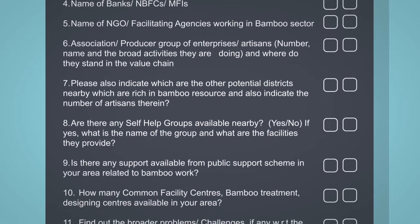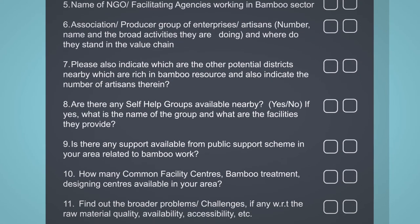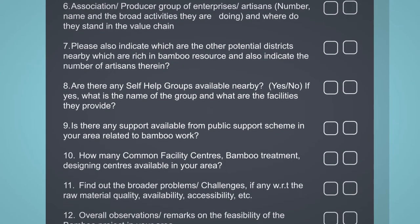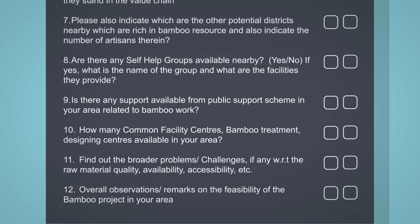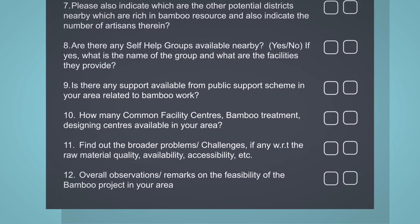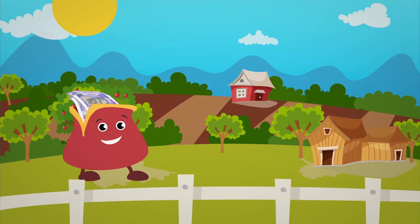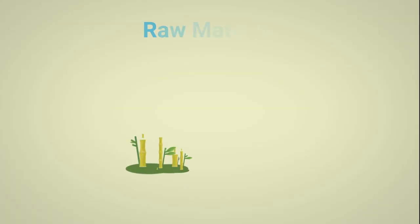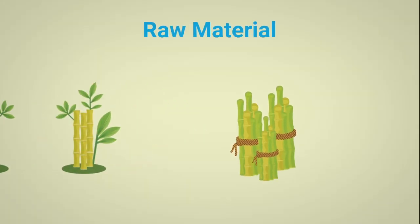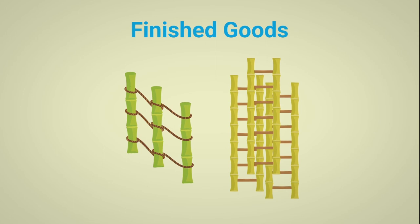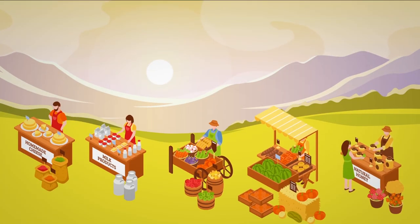These support schemes include common facility centers, bamboo treatment centers, and designing centers. With these, product quality can be improved. To enter the market, we first look at raw material supply as step one, and then step two involves sourcing quality raw materials to make good bamboo products. We then log and bring those products to the tour market.